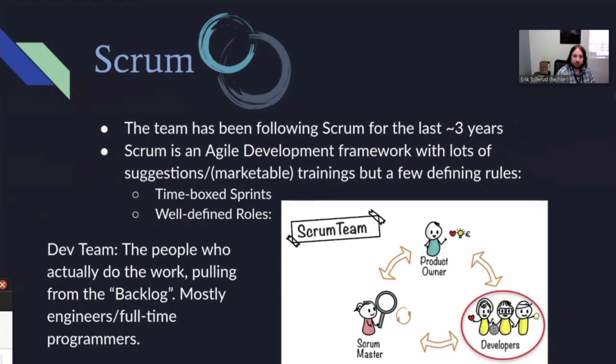The development team are basically the people who actually do the work — the actual software developers. Mostly they're engineers or full-time programmers. What they do is develop the code, own the actual work itself, and even though they pull what they're working on from the backlog — which is defined by the product owner — they're still the owners of the actual software development work. They have to write the code and in many cases strategize around the overall architecture.